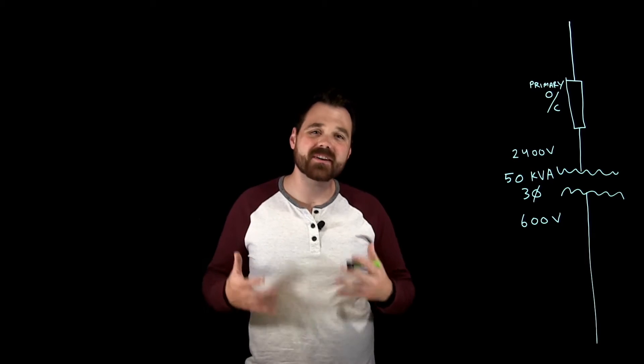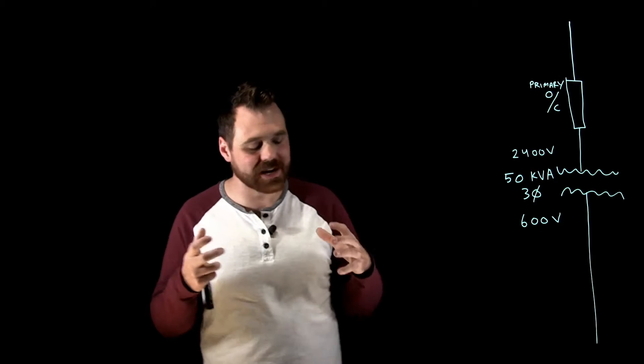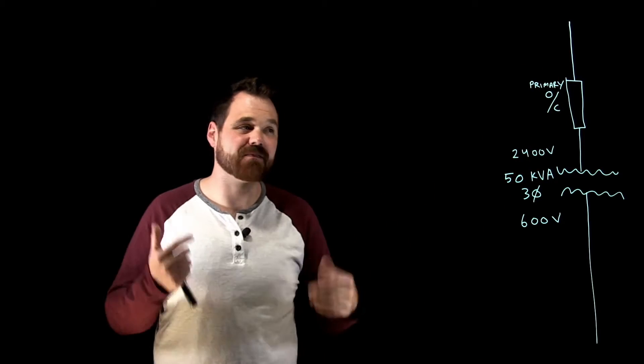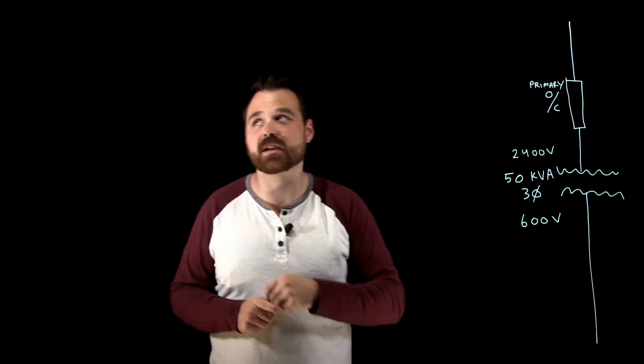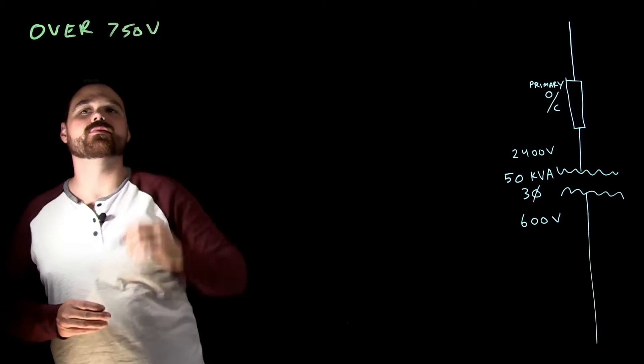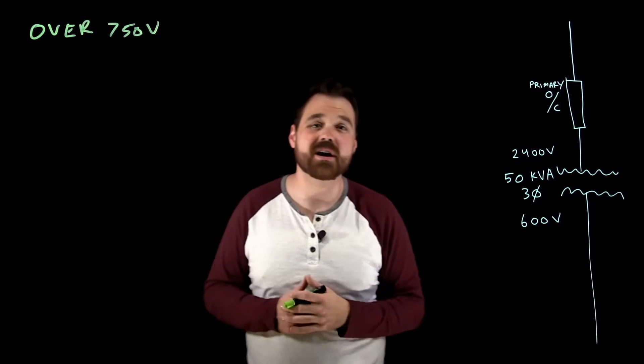Hi, this is just going to be a quick video. I want to talk about how I would go about sizing the overcurrent device protecting the primary of a high voltage transformer. So I'm talking here, a transformer over 750 volts. A high voltage transformer, you can see here at 2400 volts.